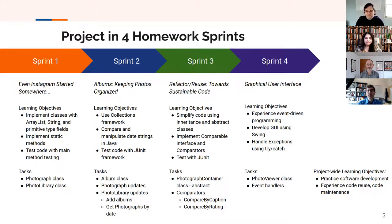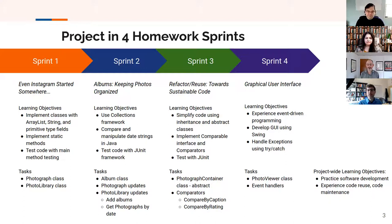In the third sprint, we ask students to reimagine their design using the properties of inheritance and abstraction, creating an abstract photograph container class to provide the shared functionality of storing an array list of photographs from both the album and photo library classes. They'll also implement the comparable interface and comparators to allow them to compare photographs by date, caption, and rating.